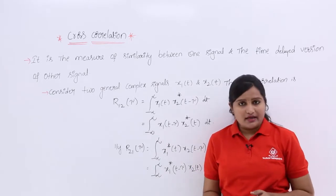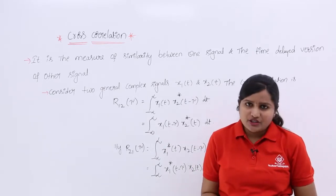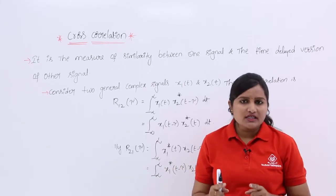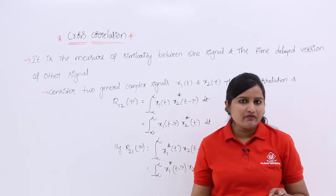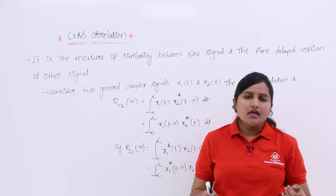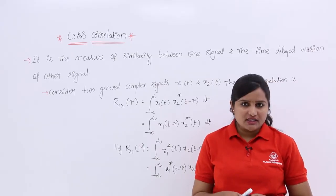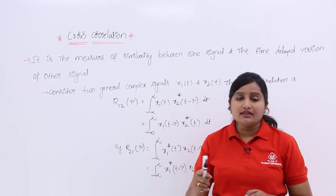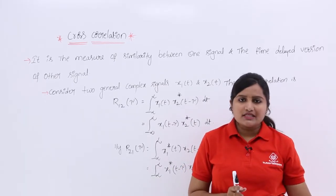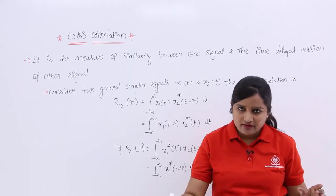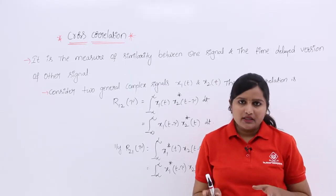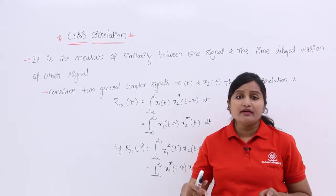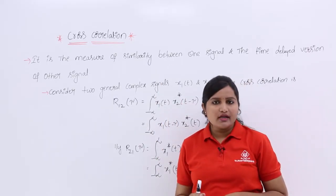Correlation is the measure of similarity between two signals. If you are measuring the similarity between a signal and its own time-delayed version, that is called the auto correlation function. If you are measuring the similarity between one signal and the time-delayed version of another signal, that is called cross correlation.